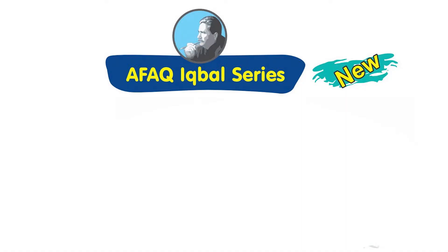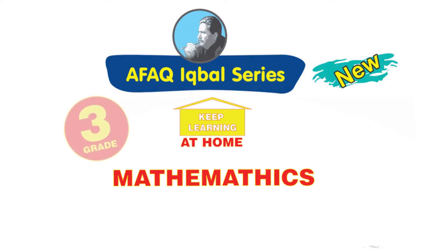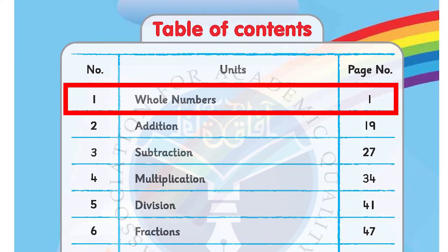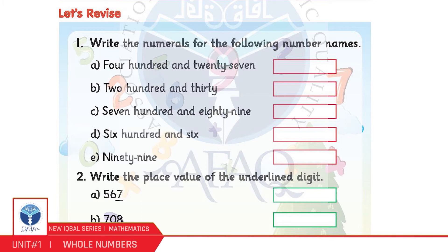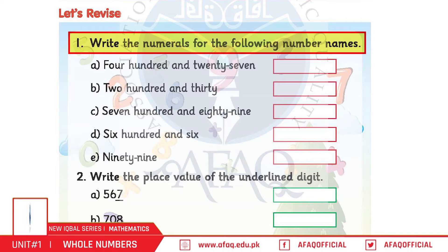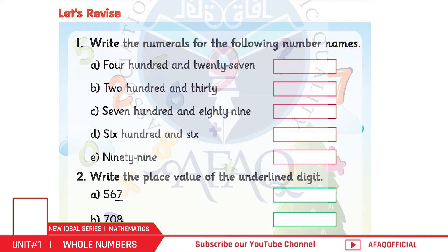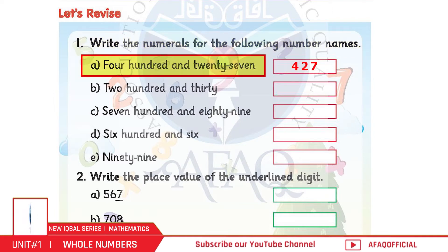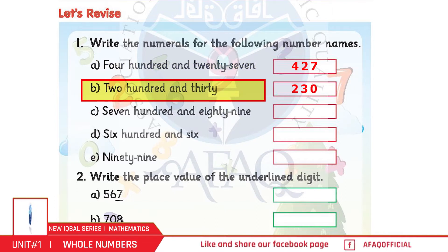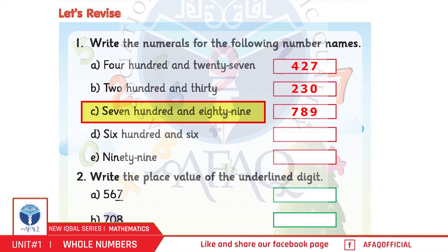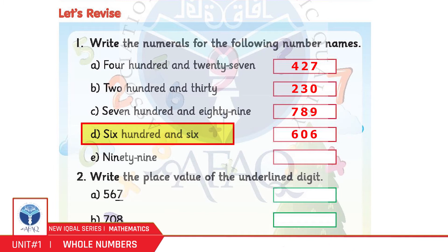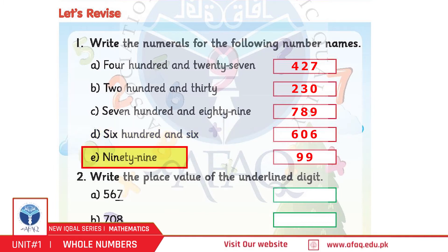New Iqbal series student resource pack — keep learning at home. Mathematics Grade 3, Academic Planner, Unit 1: Whole Numbers. Baccho, hum whole numbers padenge, lekin usse pehle kuch revision. Question number 1: Write the numerals for the following number names. A: 427, B: 230, C: 789, D: 606, E: 99.